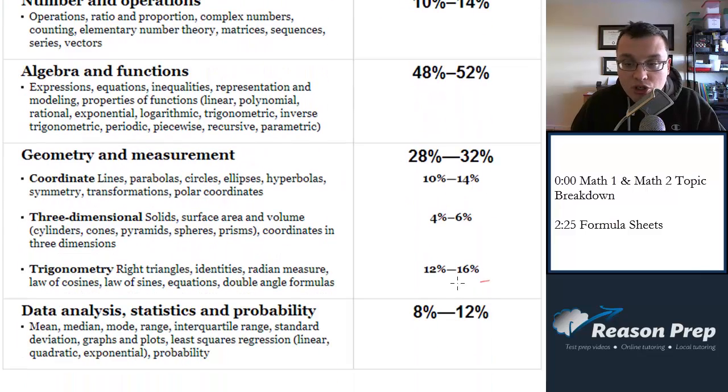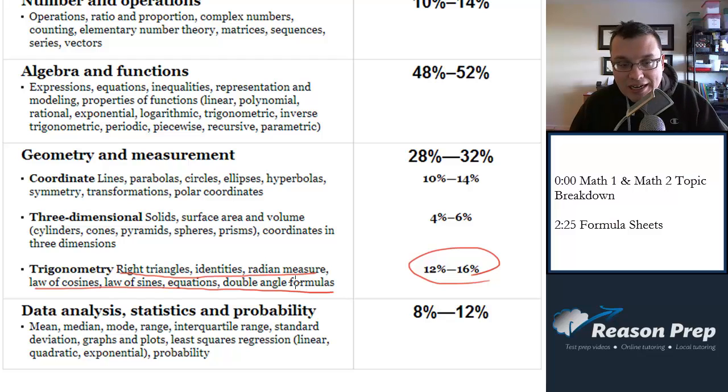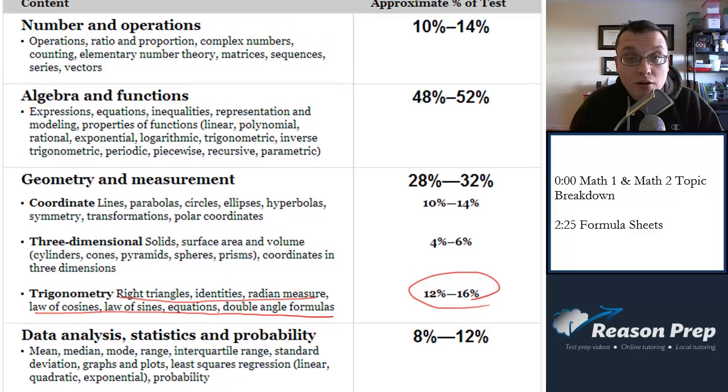And you've actually got more trigonometry and more in-depth trigonometry in the Math 2. So in the Math 2, your trig is right triangles, identities, radians, law of cosines, law of sines, equations. They claim double-angle formulas, but as we'll see, there are ways to get around the double-angle formulas and other such identities.